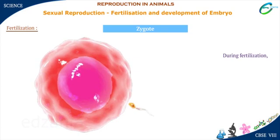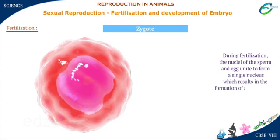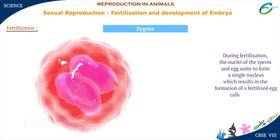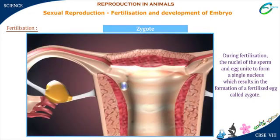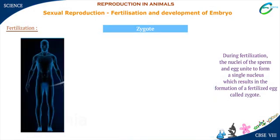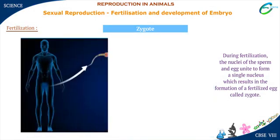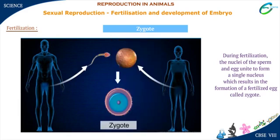During fertilization, the nuclei of the sperm and egg unite to form a single nucleus, which results in the formation of a fertilized egg called zygote. Zygote is the beginning of a new individual. Since it is formed by the union of one cell from the male and one from female, it inherits some characters from both the parents.